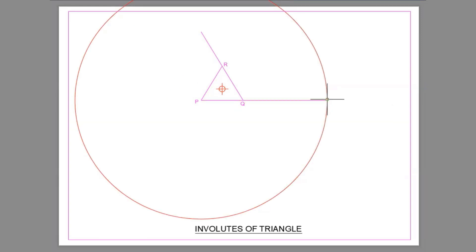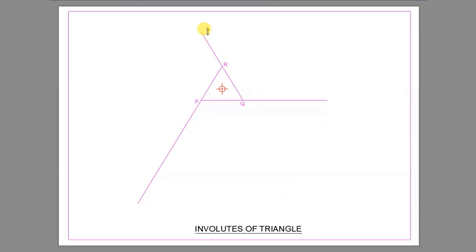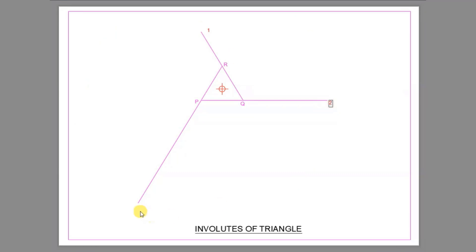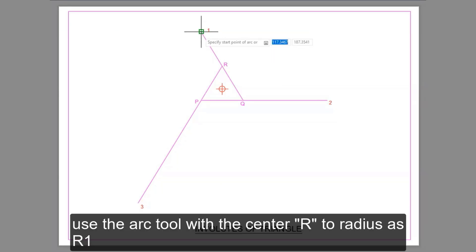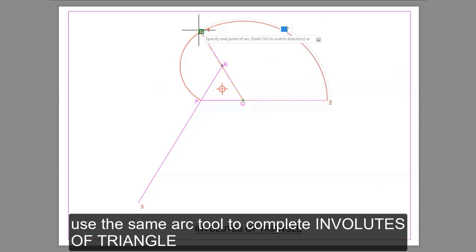Now we have finished extending the lines to the circumference. Mark the numbers accordingly and join all end points. Choose the arc tool with center R and radius R1. Use the same arc tool method to complete the Involute of Triangle.